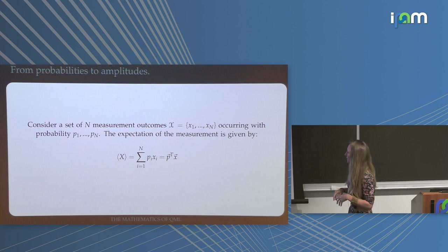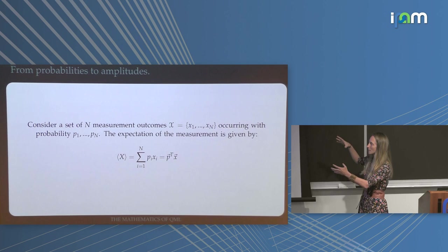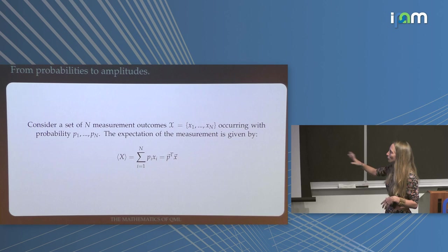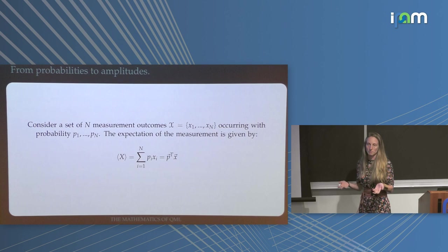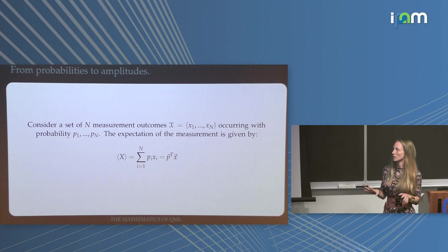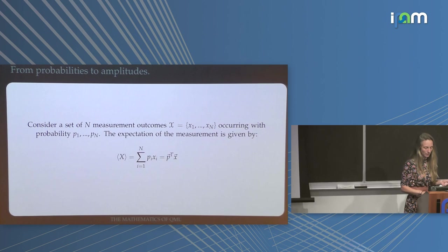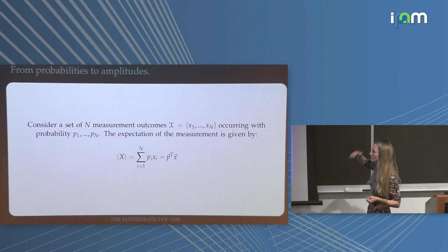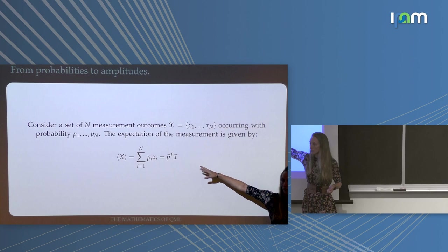If you have a set of n measurement outcomes with a probability for each — and quantum theory is really about describing the expectation of a measurement, nothing else — then the expectation is just a weighted average of what you see. For example, the measurement could be the energy of a system, and then this would be the expected energy. Or if it's a particle in boxes, you can number which box it's in.